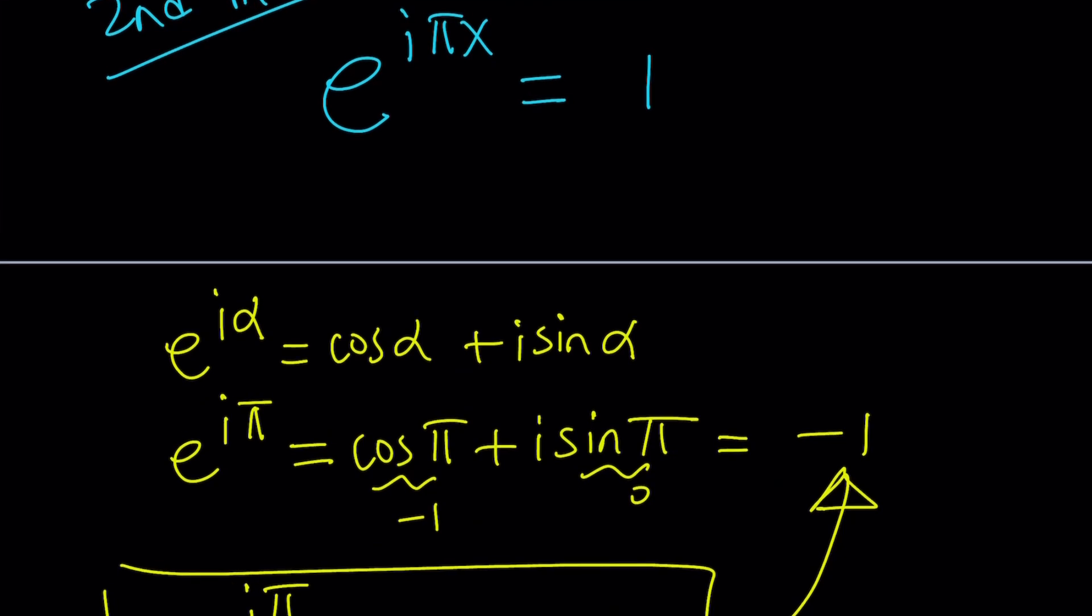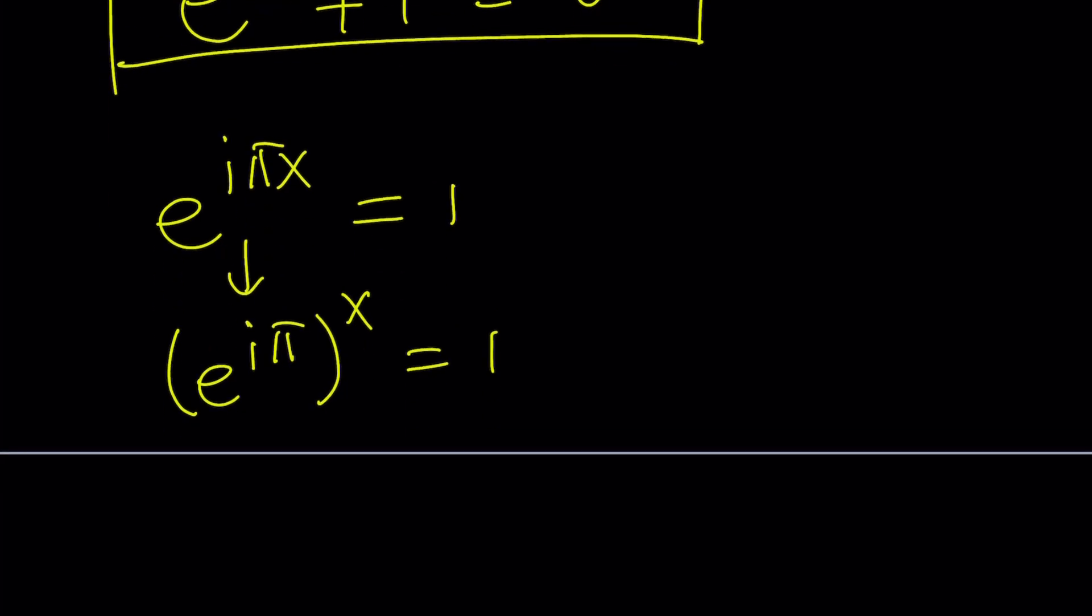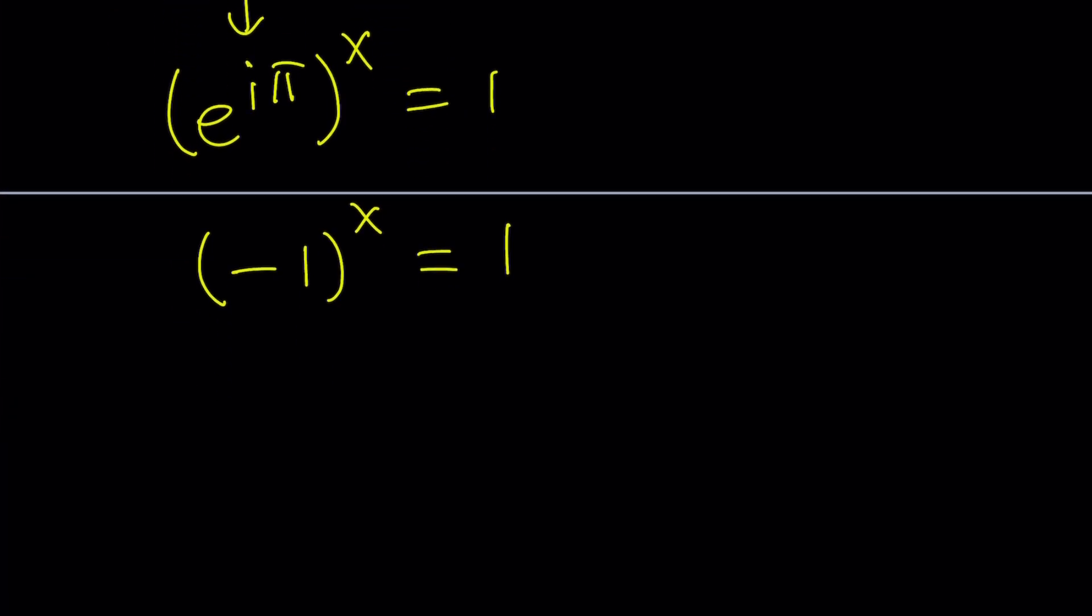So what does that tell us? So I can replace e to the power i pi with negative 1. How can I use e to the power i pi here? This can be written as e to the power i pi to the power x equals 1. And then replace e to the power i pi with negative 1. And then you get something interesting, right? Negative 1 to the power x equals 1. When is this true? When x is an even integer, even powers of negative 1 equals positive 1. So x must be an even integer, like 2k, where k is an integer. So we pretty much got the same result.